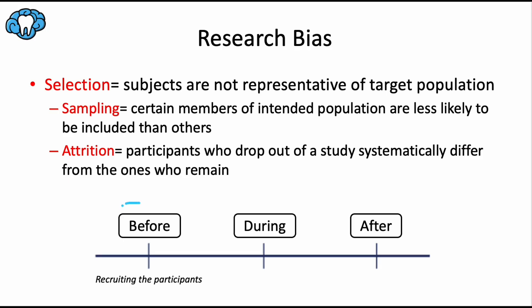First, we're going to talk about research bias that occurs before the actual study is conducted — that would be during the recruitment of participants or subjects. Selection bias is when the participants selected in the study do not accurately represent the target population. There are two examples of this: sampling bias and attrition bias.